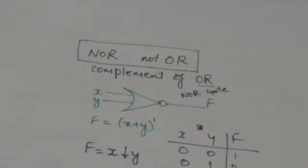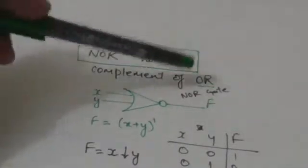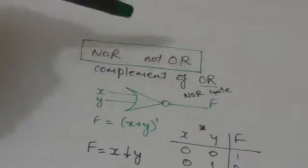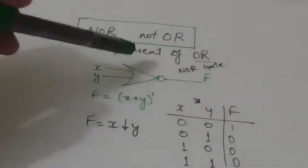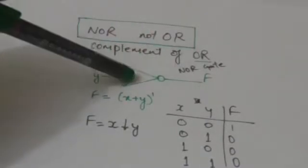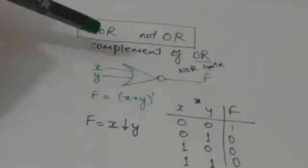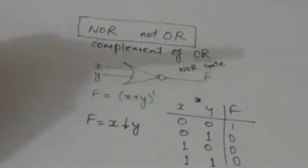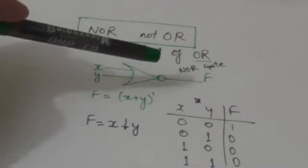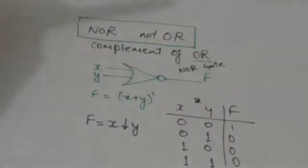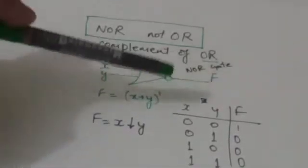NOR function is an abbreviation of NOT OR. It is the complement of the OR function. This gate is called a NOR gate, and it implements the NOR function. Here X and Y are the inputs and F is the output. Since NOR function is NOT OR, that is the complement of OR, F would be equal to the complement of X plus Y — that is, (X + Y) complement.